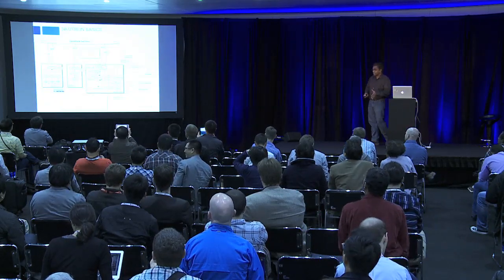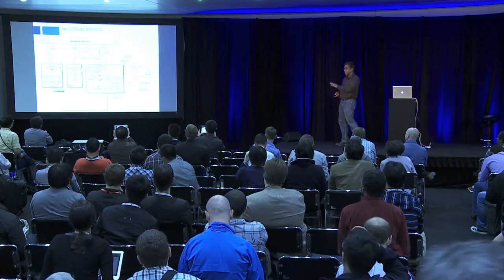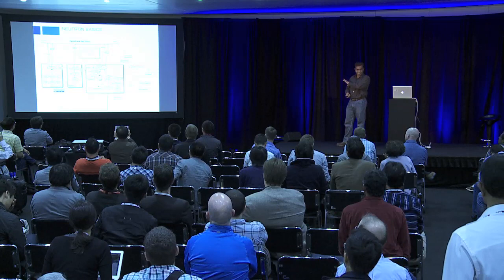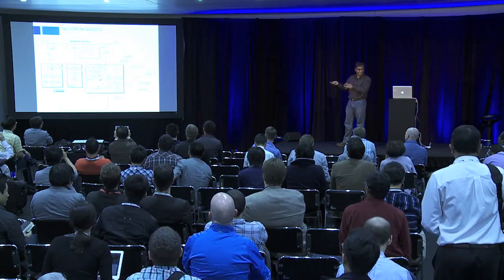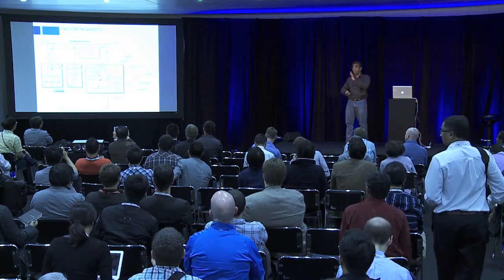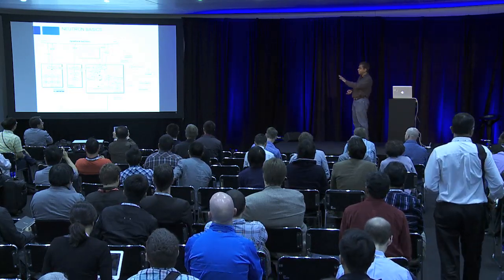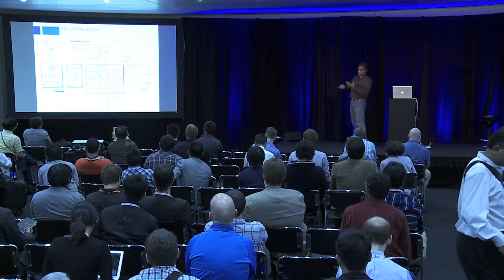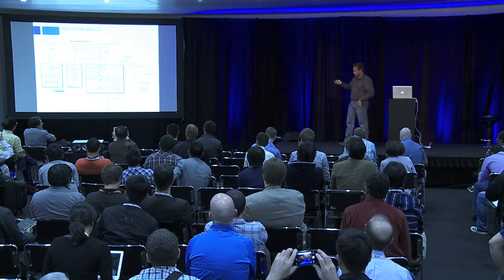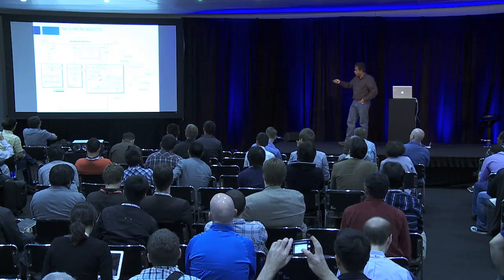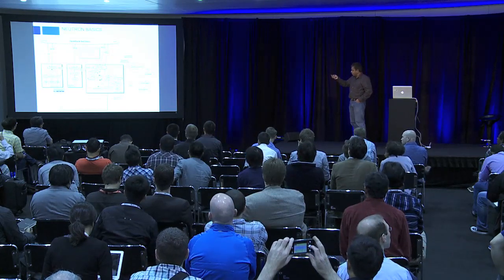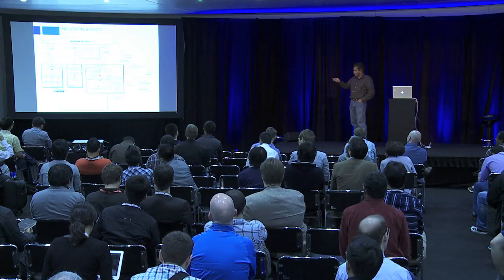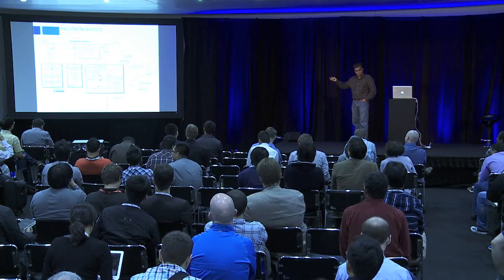This is a Neutron basic diagram — I apologize, it's an old slide that says 'Quantum,' but it's Neutron. The various components of OpenStack are still intact; we just don't see Ceilometer and Cinder here. This shows how Neutron gets orchestrated in OpenStack and how it interacts with Keystone and Nova.